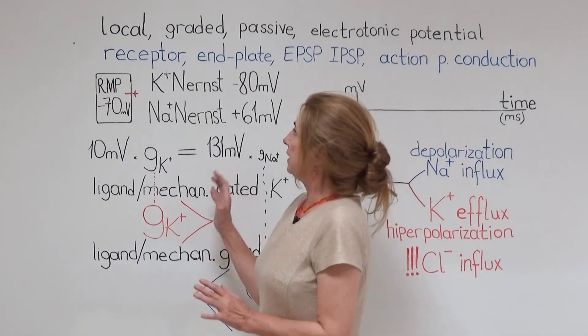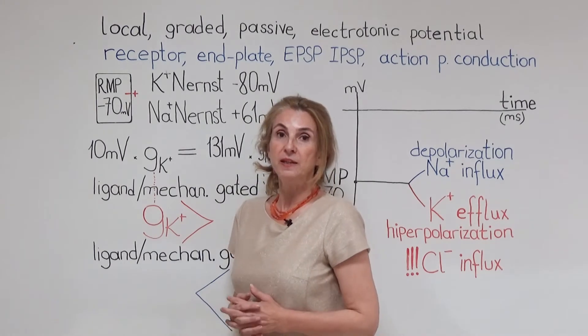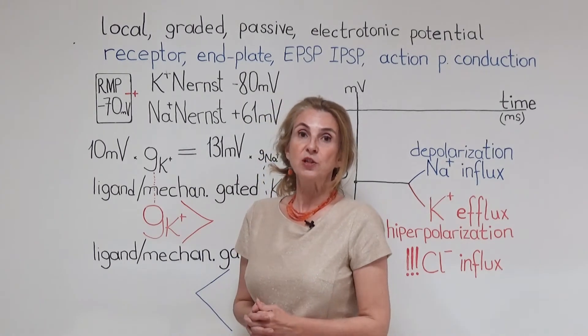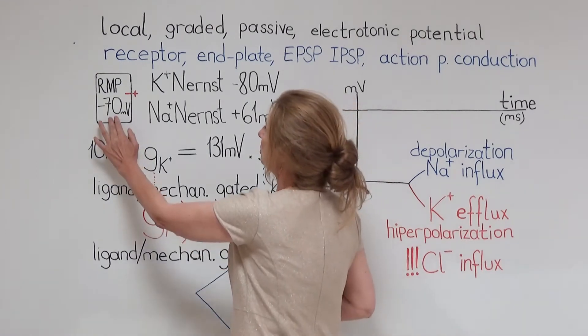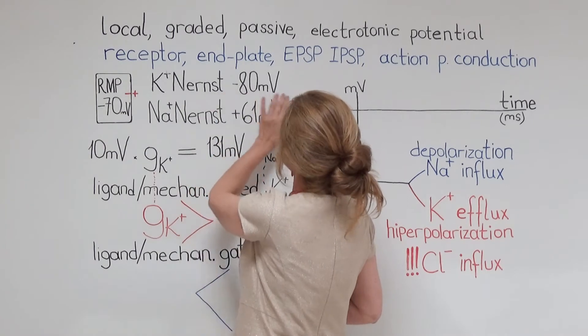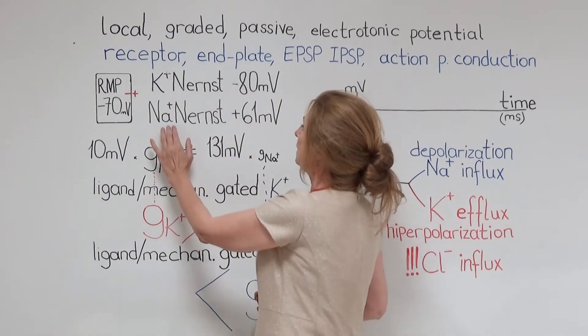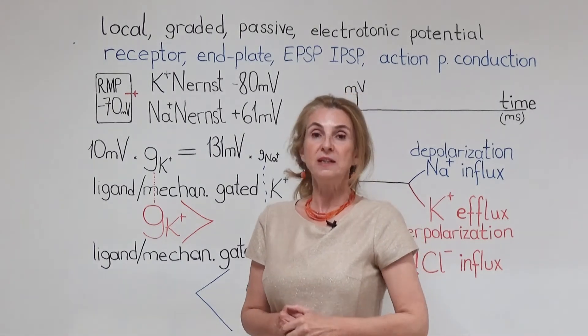To explain the local potentials, I am going to use the neuron that I have explained in the resting membrane potential video. The neuron number 4. In this neuron, resting membrane potential was minus 70 mV. Potassium Nernst potential was minus 80 mV. Sodium Nernst potential was plus 61 mV.